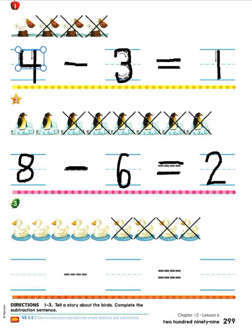There were some ducks swimming in the pond. Would you count how many ducks total were swimming in the pond? Count the ones without X's and with X's — I'll count with you: one, two, three, four, five, six, seven, eight, nine. There were nine ducks swimming in the pond. Go ahead and write a nine on the first handwriting line. Then some ducks dove underwater. Trace over the subtraction sign to show that we're taking them away. How many ducks were taken away? Let's count the ones with X's: one, two, three, four. Four ducks dove underwater.